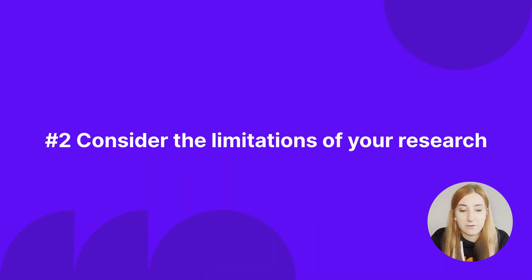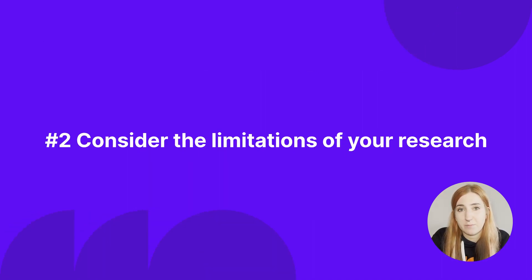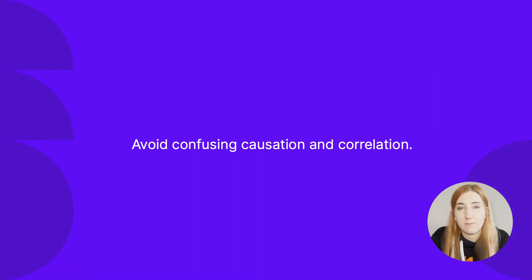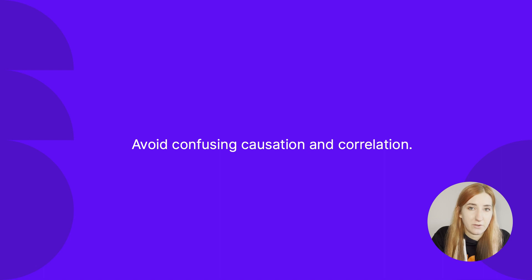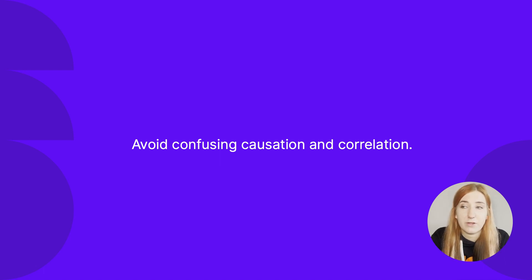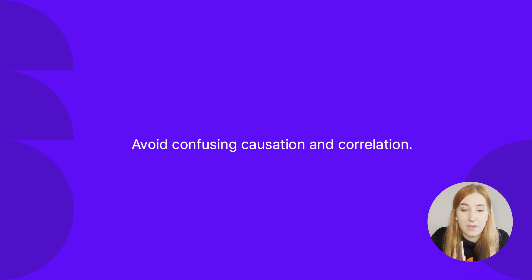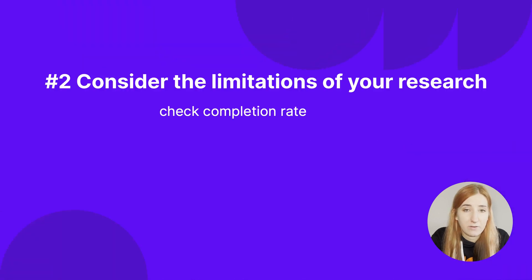Step number two: consider the limitations of your research. Many beginner researchers make the mistake of taking their results at face value. Imagine you redesigned your website and satisfaction levels increase — was this the only change you made? Or perhaps you employed a very efficient customer service agent at more or less the same time. In order to avoid this correlation versus causation mistake, think about the ways in which your data collection isn't perfect.